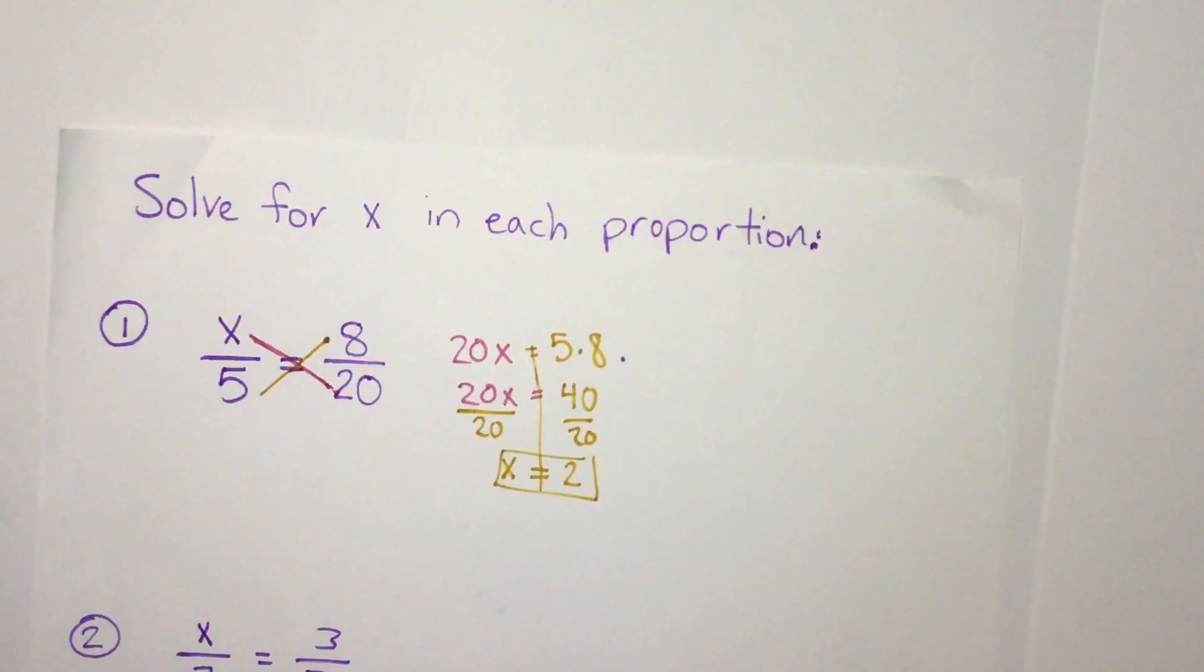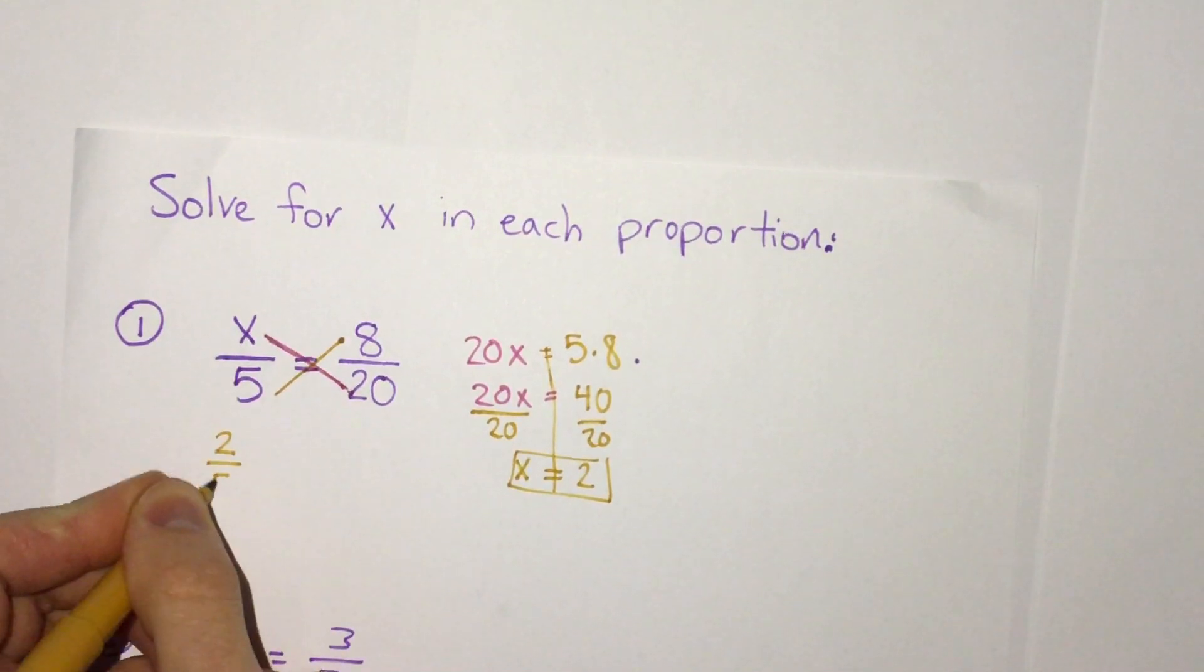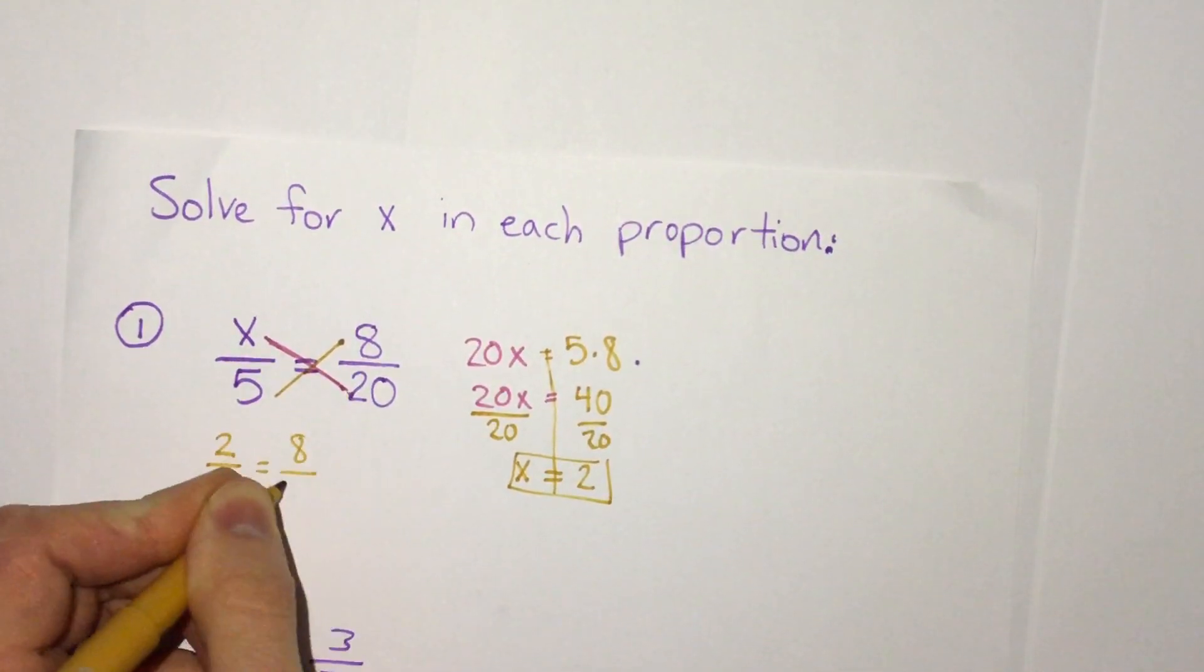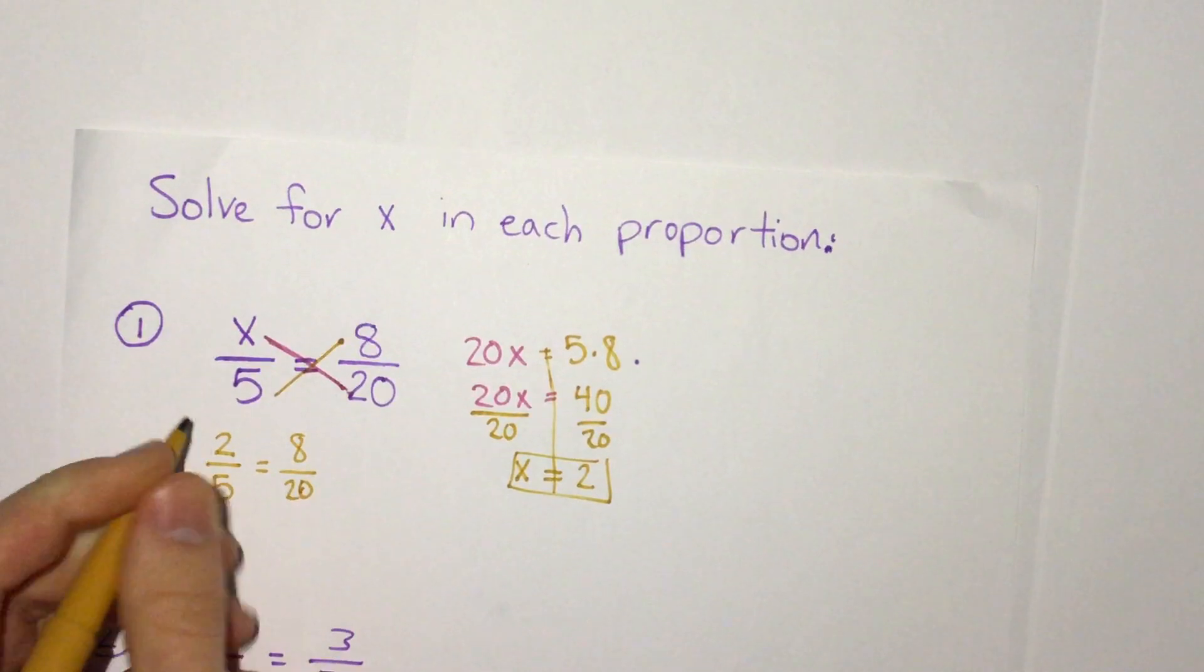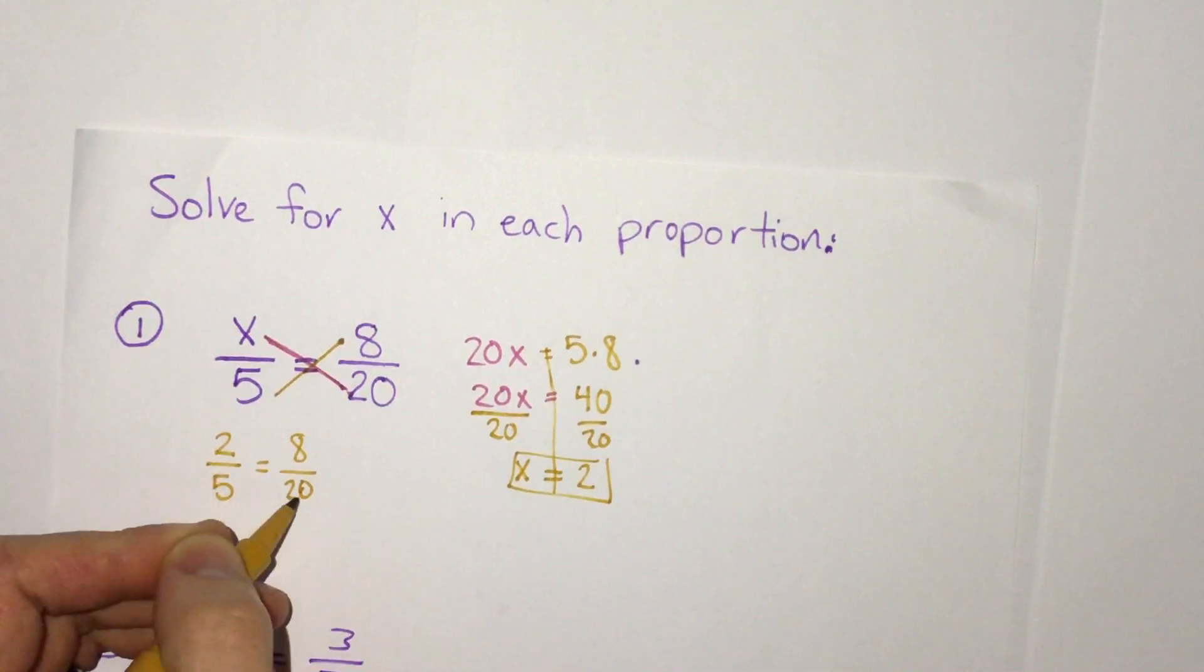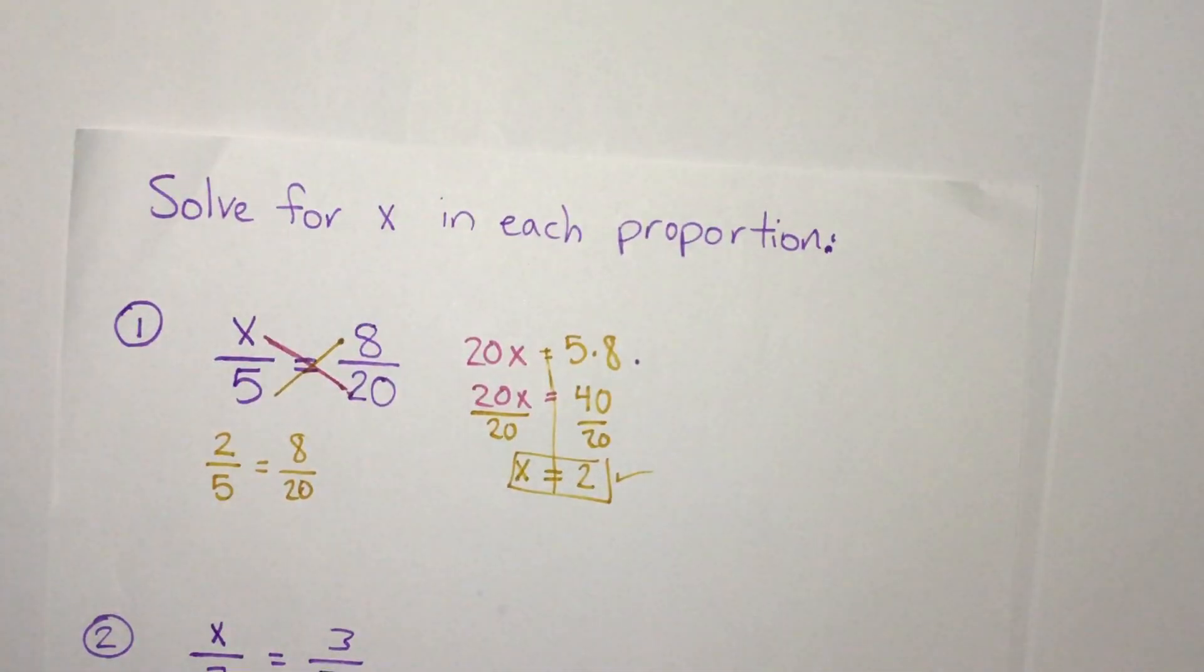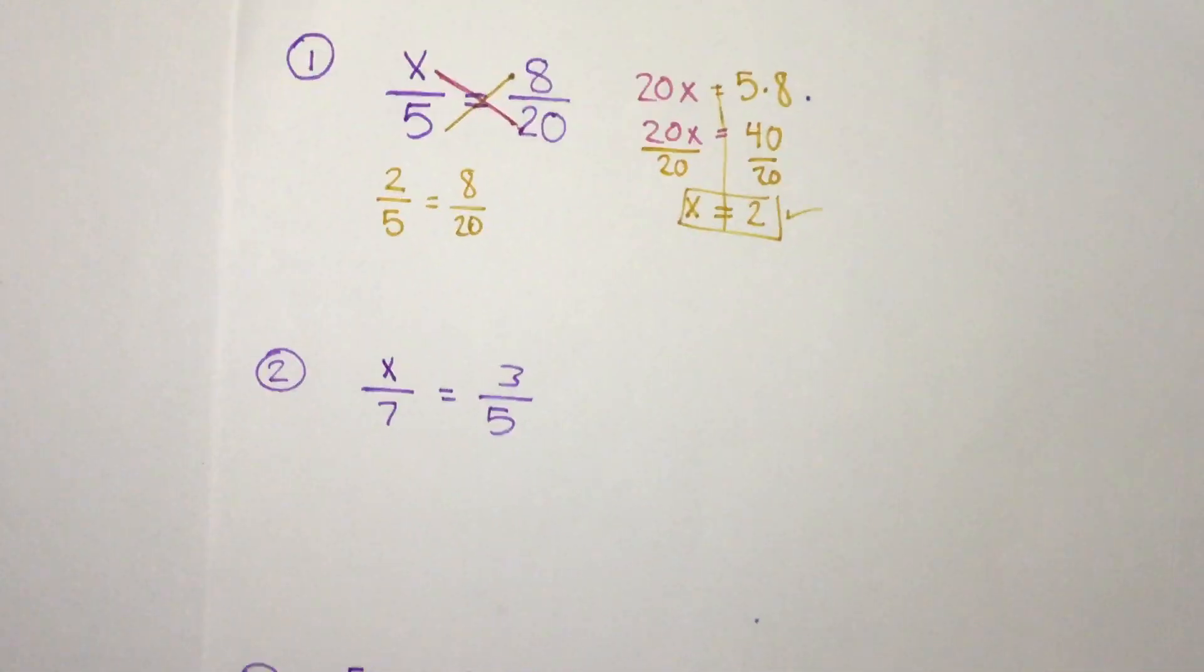We can check our answer by going back and looking if we plug x in: 2 fifths equals 8 twentieths. Is that true? Well if we think about simplifying 8 twentieths we can divide 8 by 4 and we get 2, and we divide 20 by 4 and we get 5. So they are equal fractions. That means x does equal 2. Let's look at that with a couple more examples here.